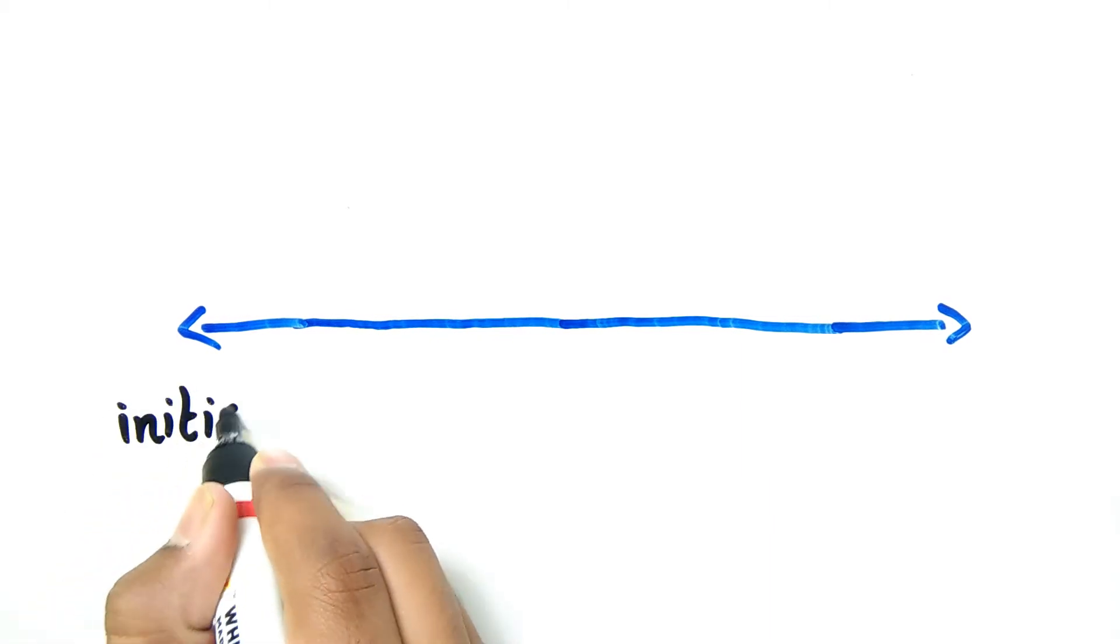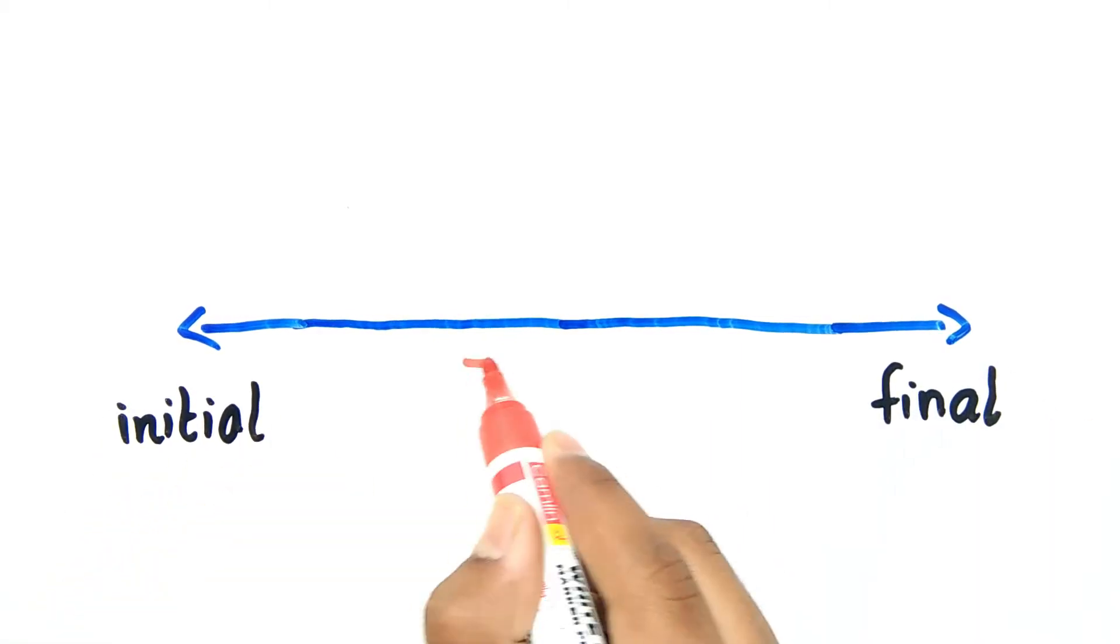It is important to remember that magnetic field is a vector quantity, which means it not only has direction but also magnitude.